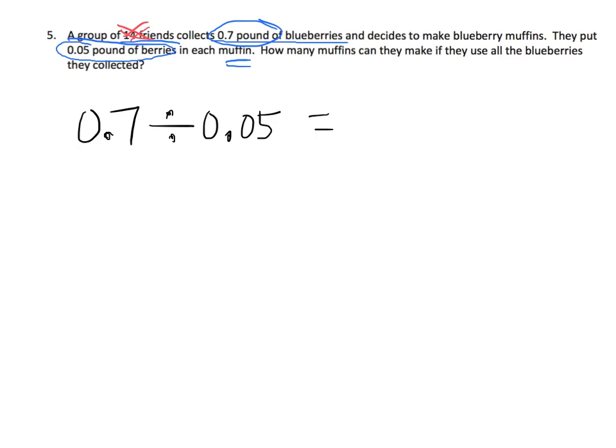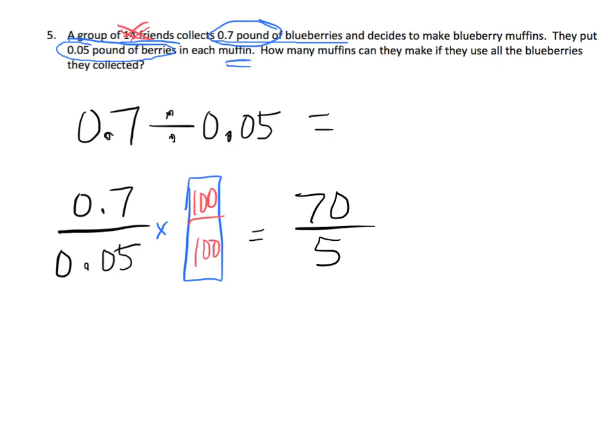And remember, we're going to write that as a fraction. And now we're going to multiply by 1. So, what should our 1 be? 100 over 100. And so, that equals, so 7 tenths times 100. So, that's going to equal 70 over 5. And then, of course, 0.05 times 100 is 5. There you go.